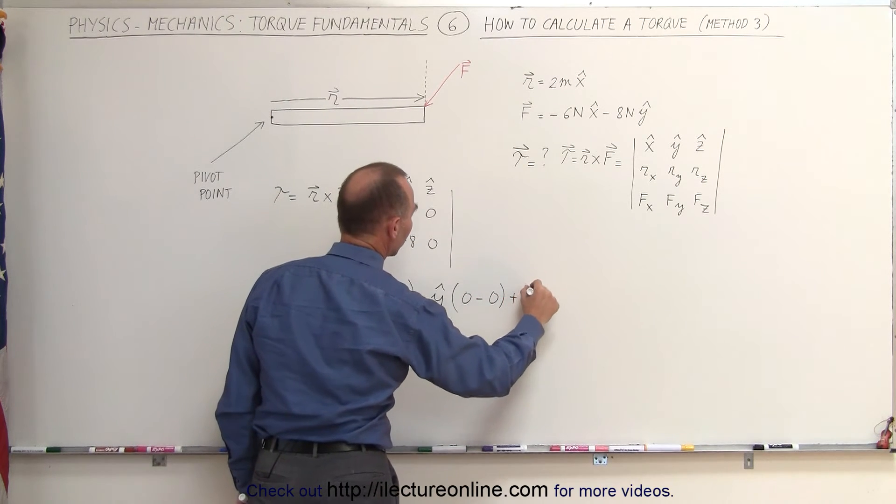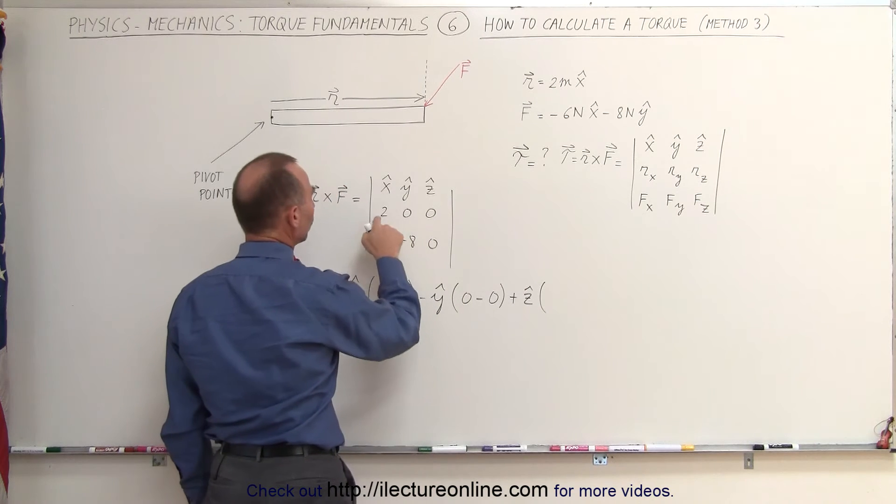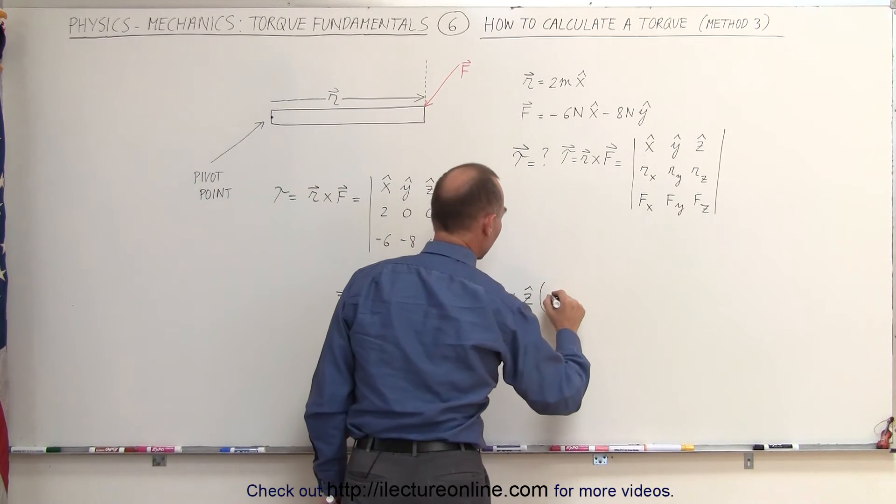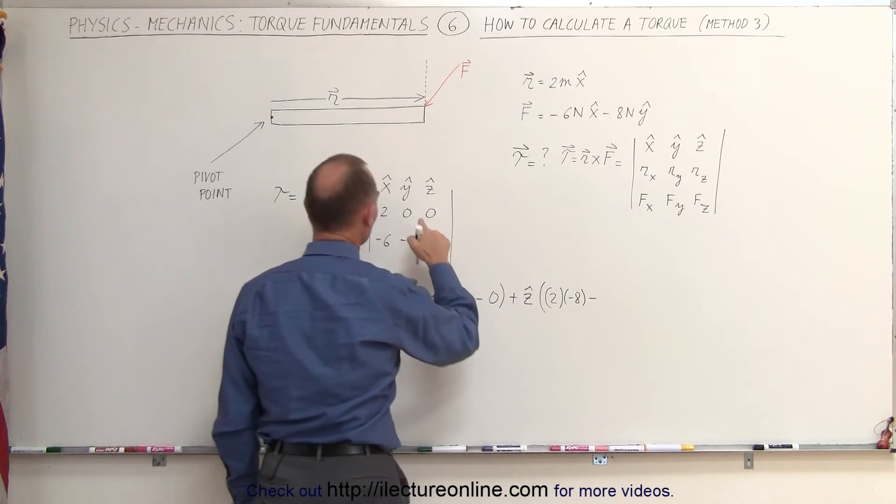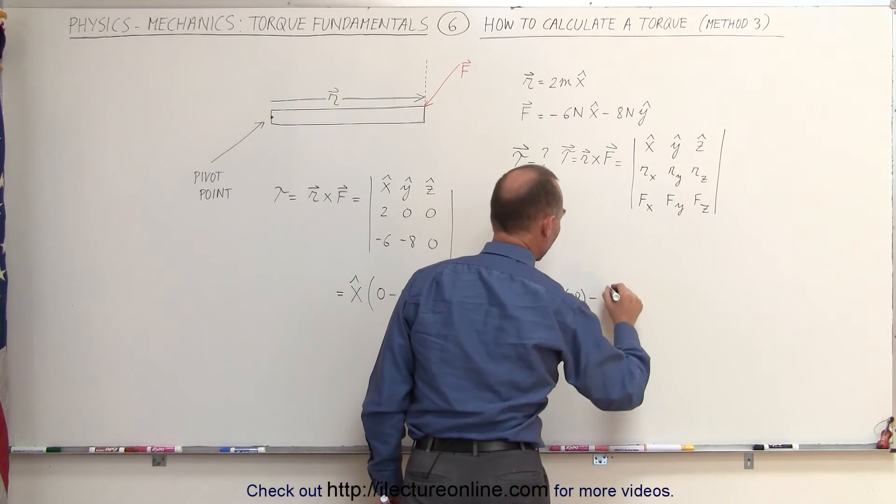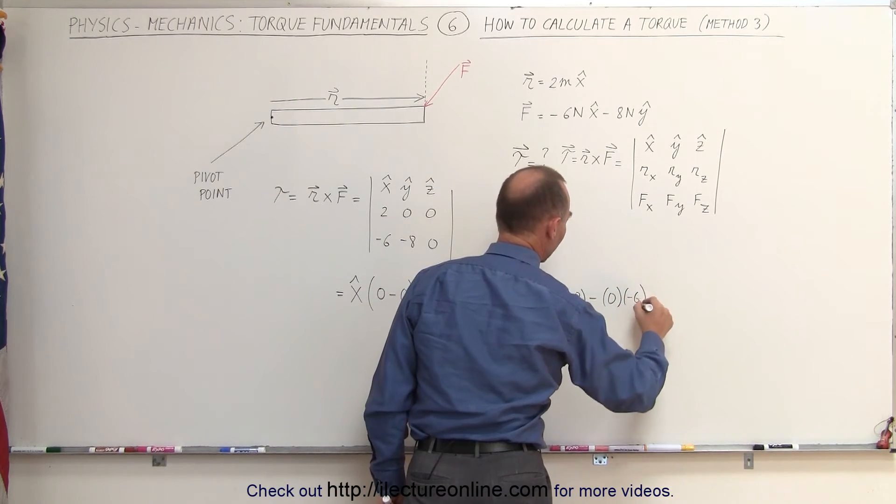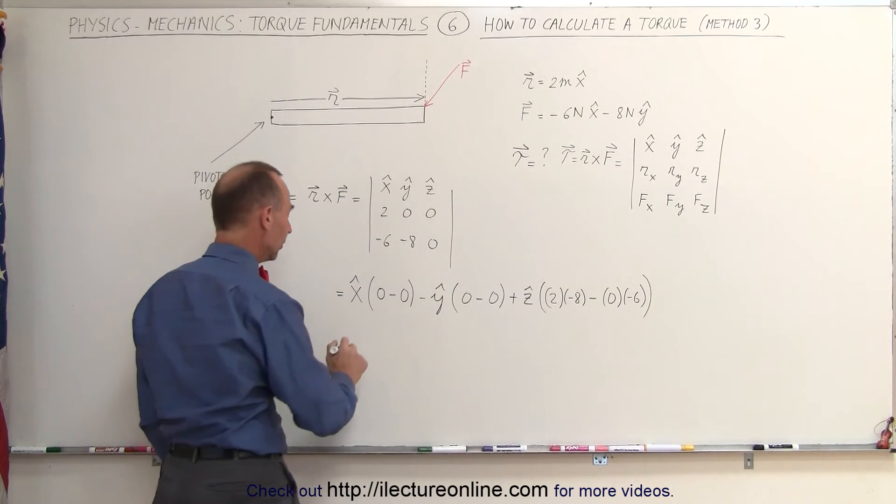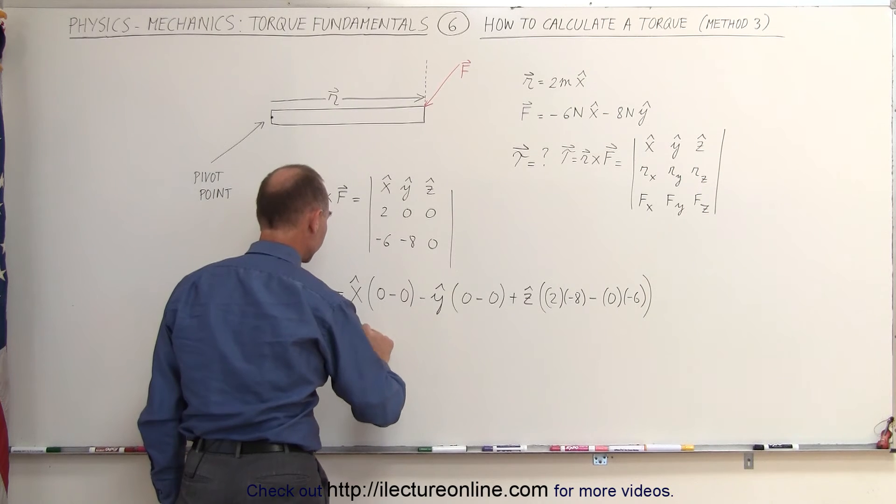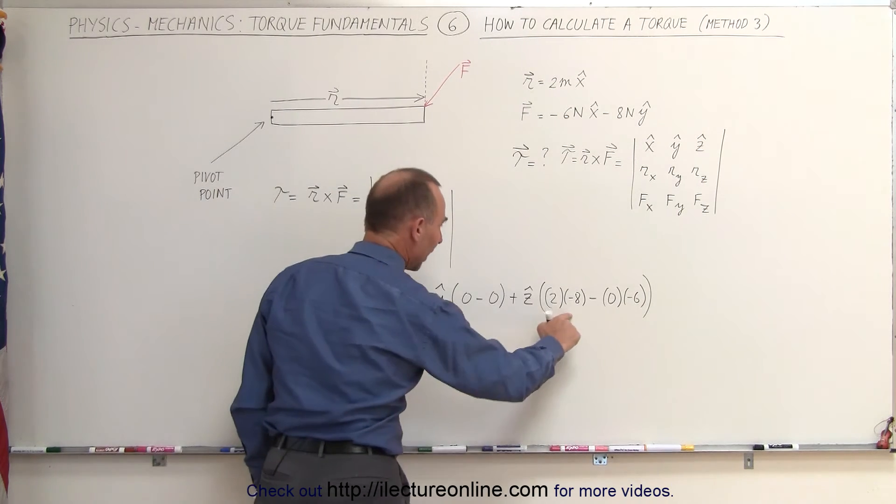And plus the z component of the unit vector: 2 times the negative 8, minus 0 times negative 6. You can see here that the x and the y components are both 0, and the z component is equal to minus 16.